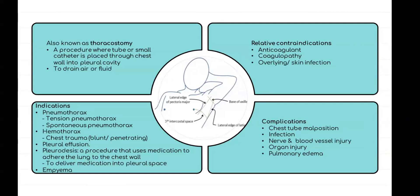The indications for chest tube insertion include pneumothorax, either tension or spontaneous. In tension pneumothorax, the trachea is deviated away from the affected lung and the mediastinum is shifted to the opposite side. Another indication is hemothorax from blunt or penetrating chest trauma — blunt trauma like motor vehicle accidents and penetrating trauma such as stab wounds. Significant pleural effusion is also an indication.